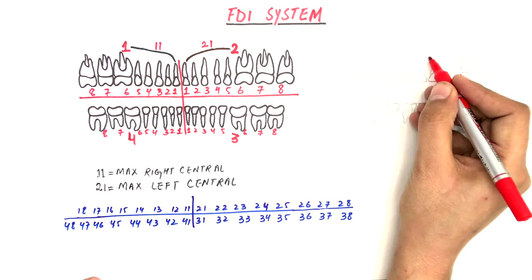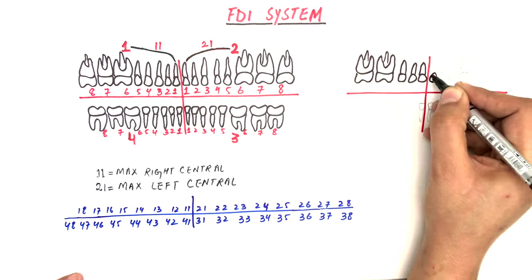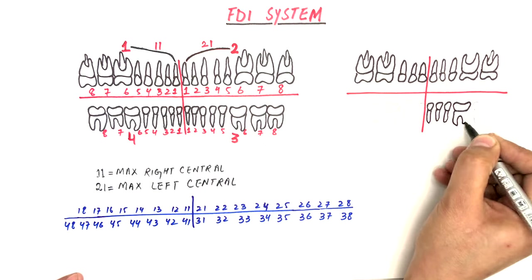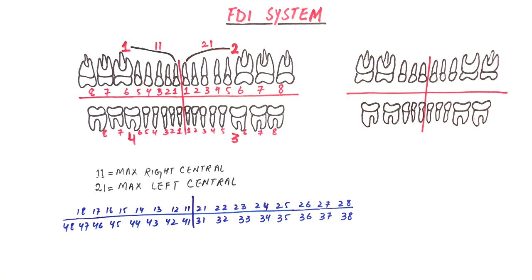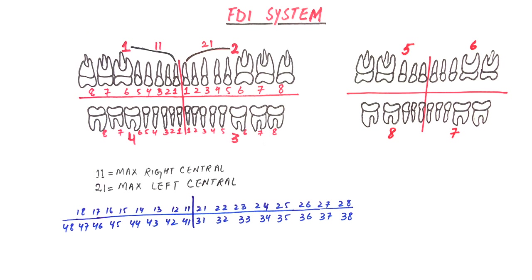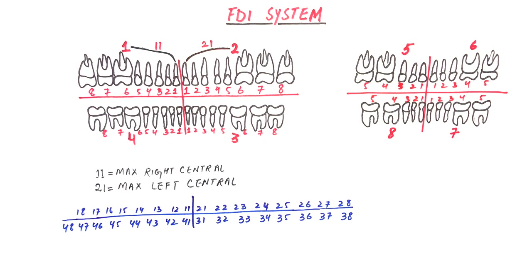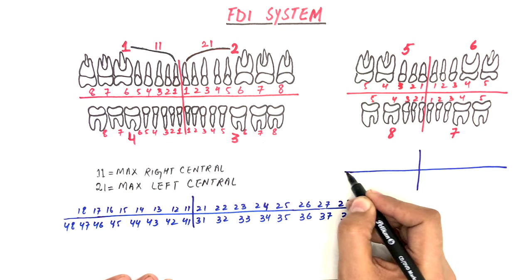In the FDI system for primary dentition, the first digit representing the quadrants starts from five to eight in a clockwise manner: number five for the maxillary right quadrant, number six for the maxillary left quadrant, number seven for the mandibular left quadrant, and number eight for the mandibular right quadrant. The second digit represents the tooth within that quadrant, starting from one to five, with digit one representing the central incisor and digit five representing the second molar. The FDI tooth numbering system for the entire primary dentition is represented as follows.